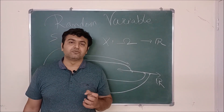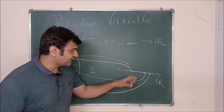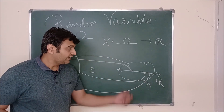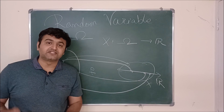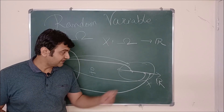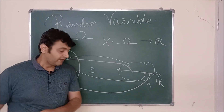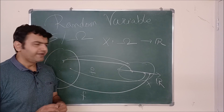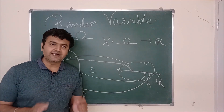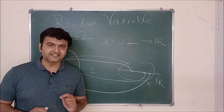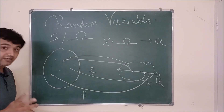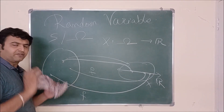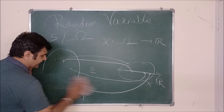As for why the name 'variable' — after this, we are going to study probability distributions. In probability distributions, the range of X, the values that X takes, will act as a variable to the probability distribution function F. Therefore the name 'random variable'. The simple definition: it is a function from sample space to real numbers that assigns a number to each outcome.